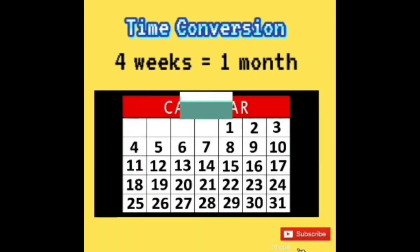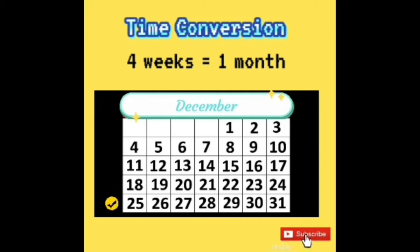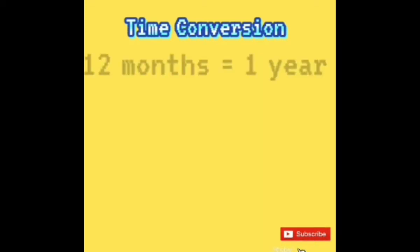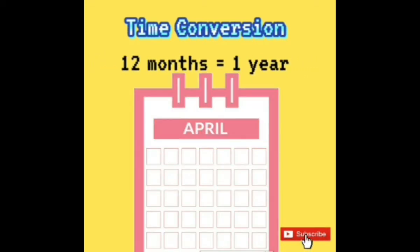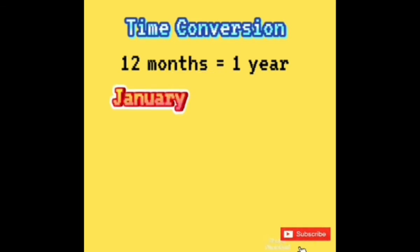4 weeks is equal to 1 month: First week, Second week, Third week, Fourth week. Twelve months is equal to 1 year. January,